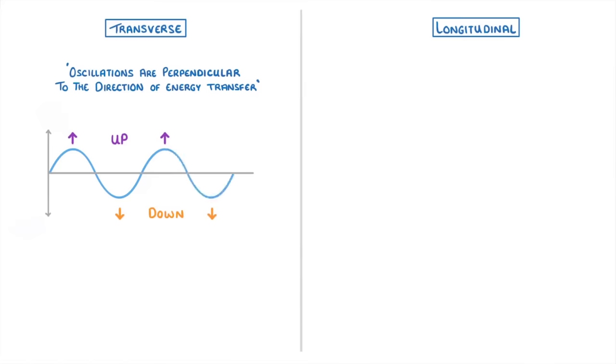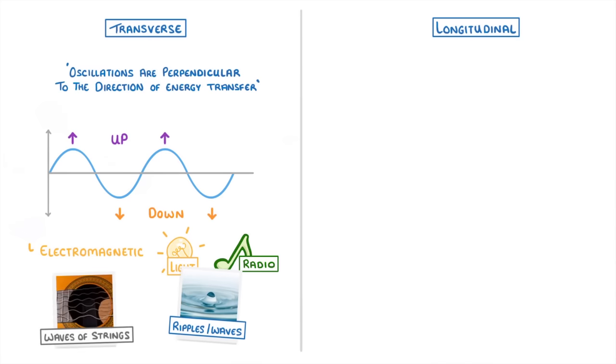Most waves we can think of are transverse, including all electromagnetic waves, like light and radio waves, ripples and waves in water, and the waves of strings like on a guitar.